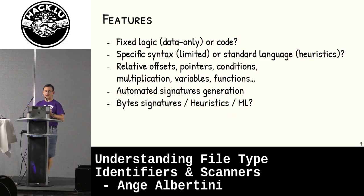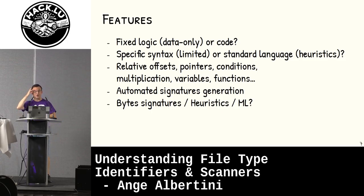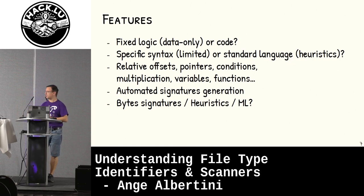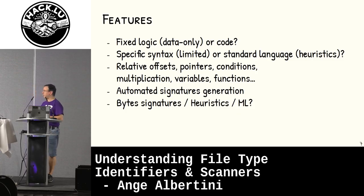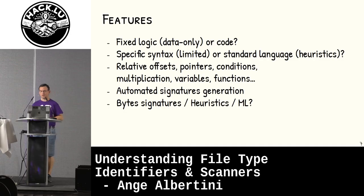File scanners, file format detection, and so on — you can call it however you want. Some have a very fixed logic where you only provide data, which makes them quite easy to understand. Some can provide actual code, which can be in a standard language — in which case you can express any kind of heuristic — or sometimes it's a very specific syntax, like with libmagic. And then there are features that may or may not be part of each engine. Some have automated signature generation, which could lead to a lot of false positives. In the end, it all matters: are we checking for byte signatures, just heuristics, or machine learning?